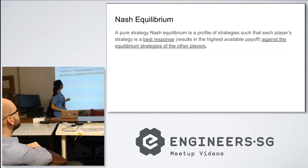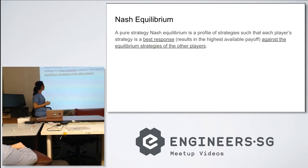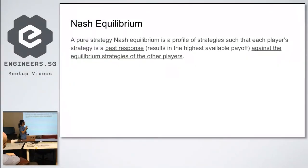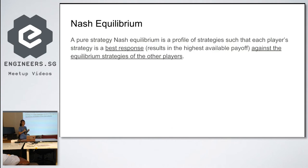Next, let's cover the very famous Nash equilibrium. A pure strategy Nash equilibrium is a profile of strategies such that each player's strategy is a best response against the equilibrium strategies of the other players. We're looking at pure strategy, meaning every player chooses one action and sticks with it. Think about rock-paper-scissors — in pure strategy you just choose one.